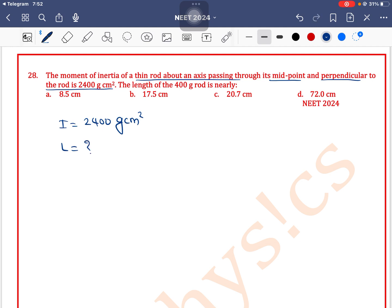It is asked to find the length if mass given is 400 gram. Now we know that for a thin uniform rod, moment of inertia when axis of rotation is passing through midpoint is ML² by 12.